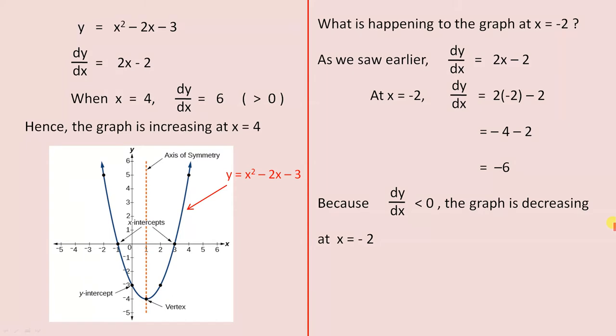So our function was y equals x squared minus 2x minus 3. We find dy/dx, and that gives us 2x minus 2. So when x equals 4, dy/dx equals 6, which is greater than 0.